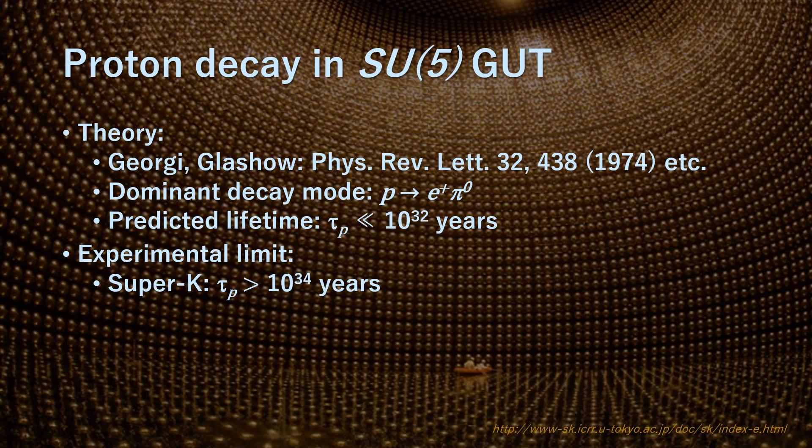In non-SUSY GUTs, the GUT scale is of the order of 10^13 to 10^15 GeV. The dimension-6 baryon-violating operators mediate nucleon decay with a lifetime less than 10^32 years. This is ruled out by the present bounds from Super-Kamiokande, which place the limit at greater than 10^34 years.